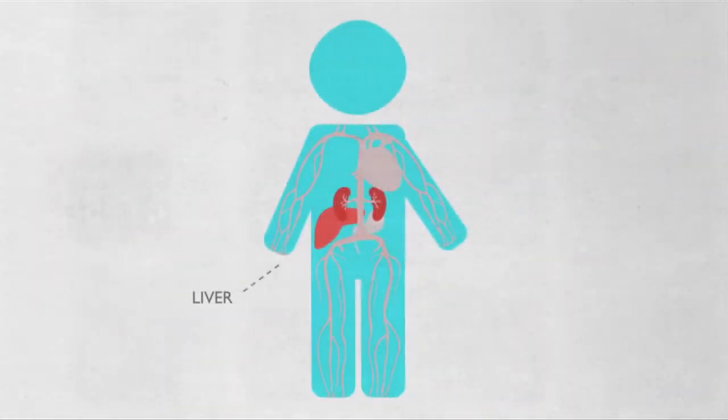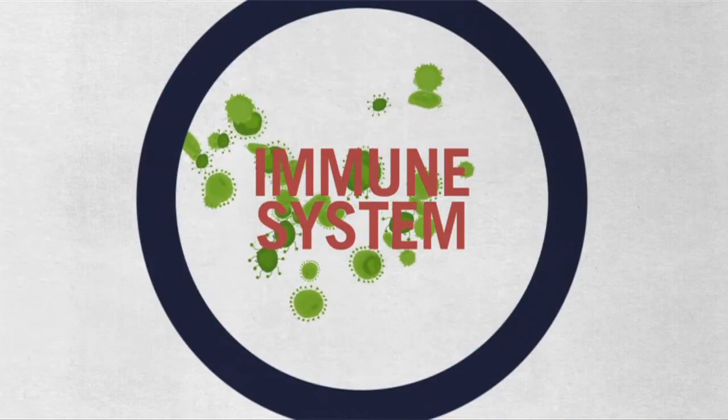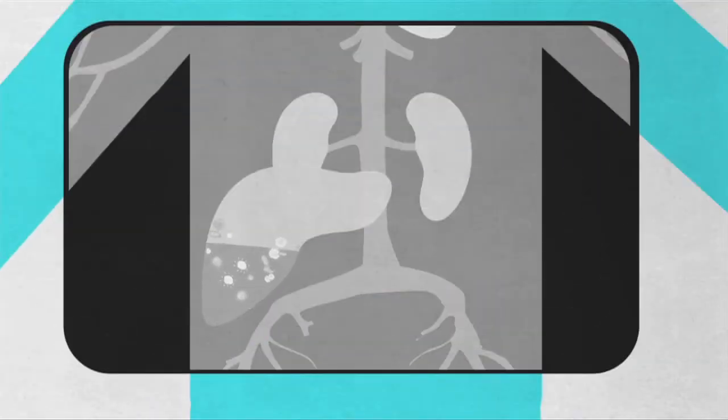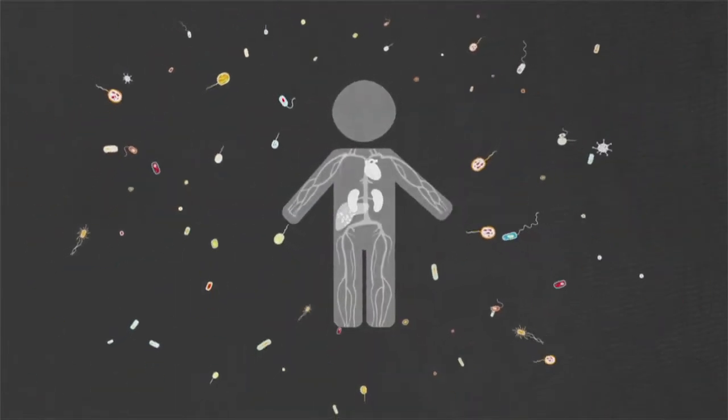Vital organs like the liver and kidneys filter out toxins and waste, while the immune system fends off diseases. But when a child is malnourished, dangerous toxins build up in the liver. The kidneys fail, and a weakened immune system crumbles in the face of killer diseases.